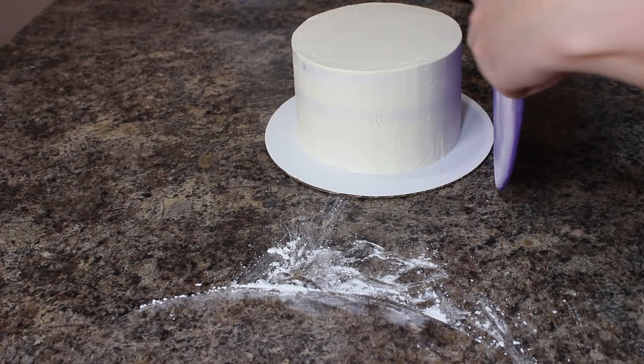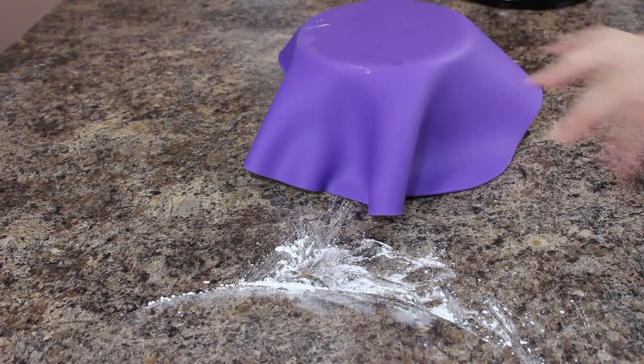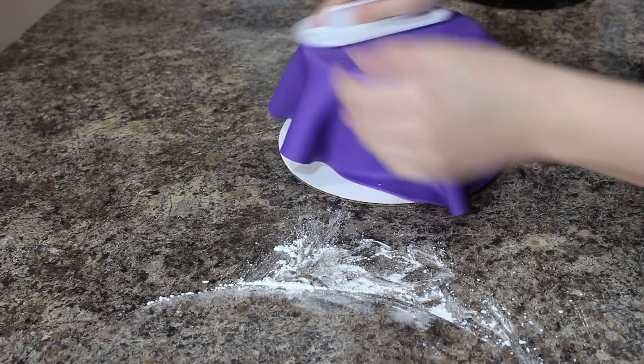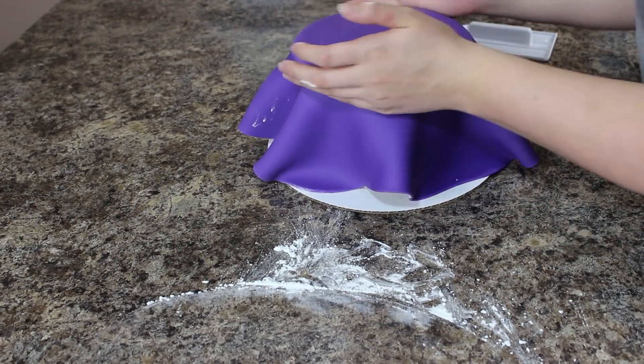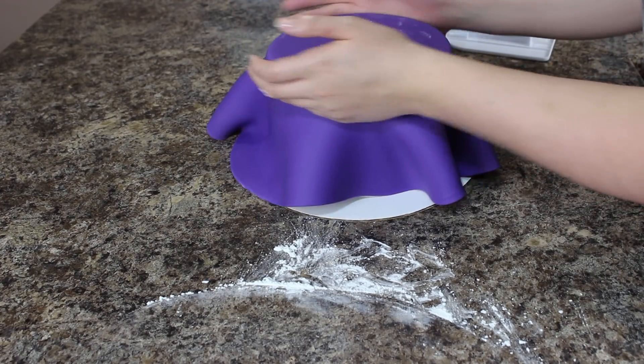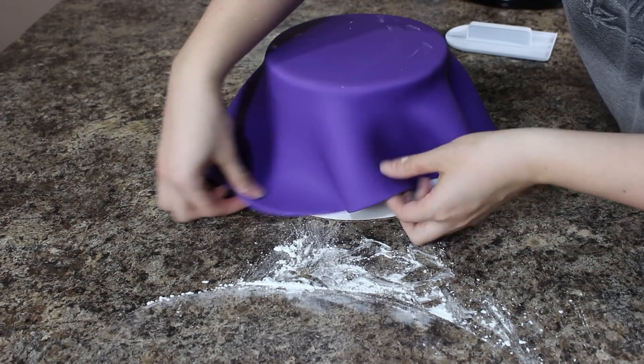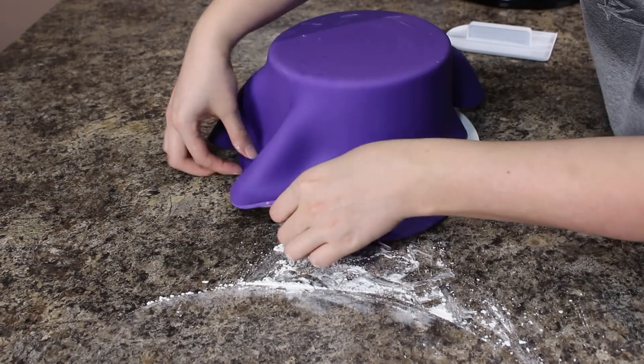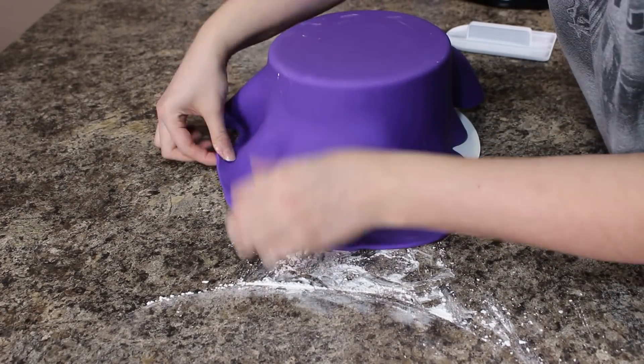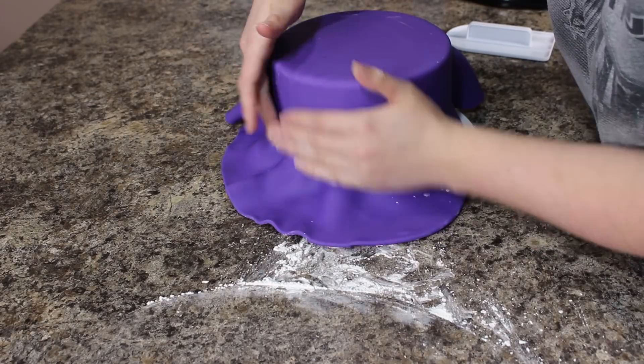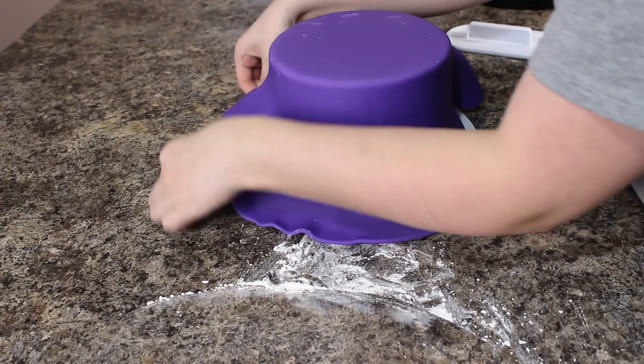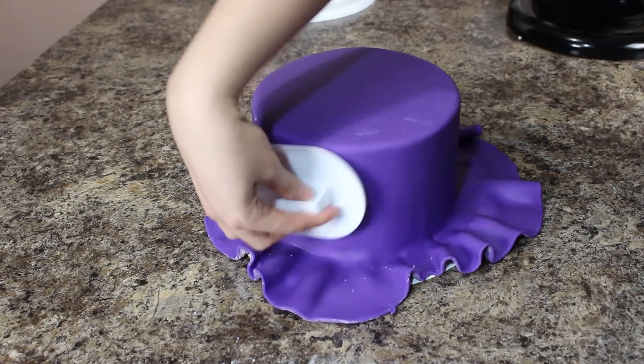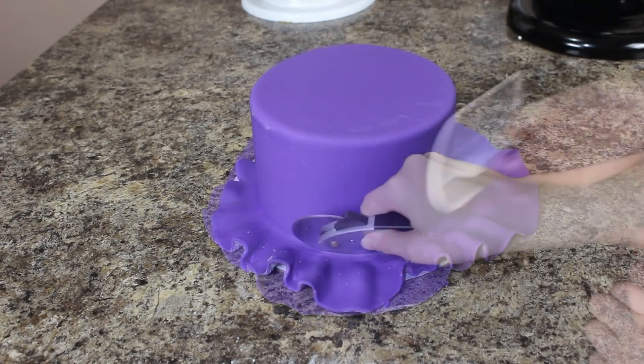I'm picking that up with my fondant roller and draping it over my chilled cake and then just working quickly with my hands and my fondant smoother, I'm pushing all the air out from the top of my cake and then just working my way down the sides, pulling out all those pleats in the skirt of the fondant until I've reached the bottom. I went over the whole thing one more time with my fondant smoother and then cut away the excess at the bottom using my pizza cutter.